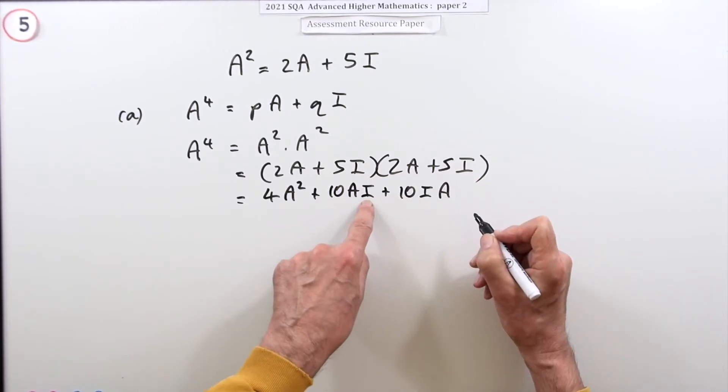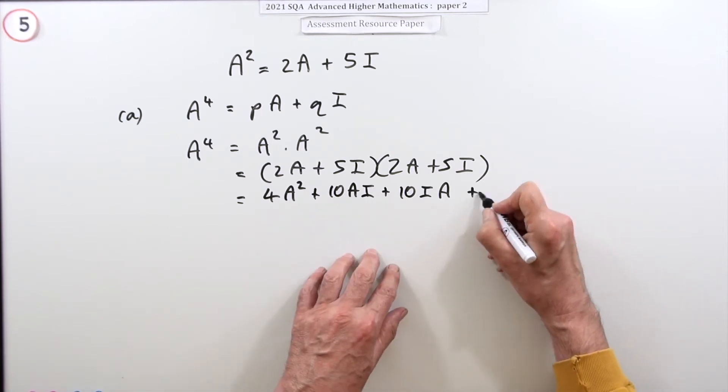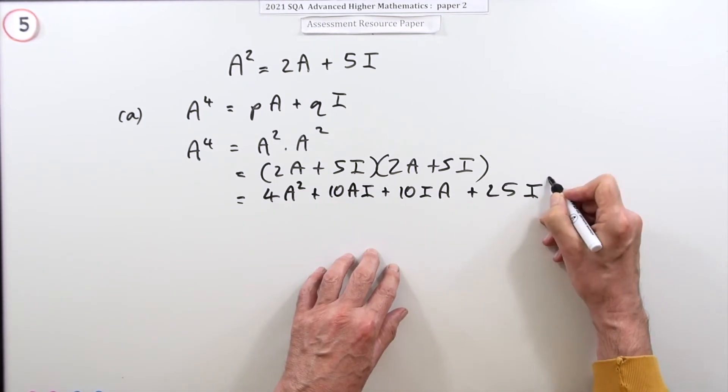Plus another 10—I'll put it down—IA. Remember it doesn't matter which way around you multiply by I, the identity matrix, the answer's still just A, plus 25I².